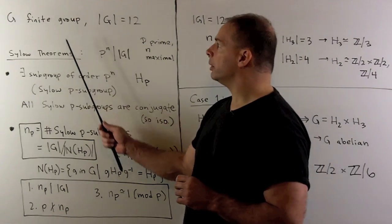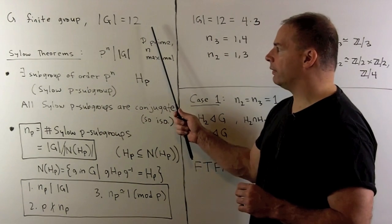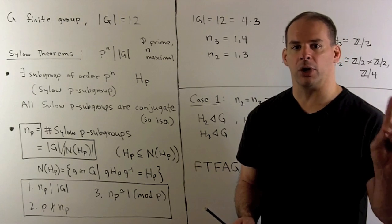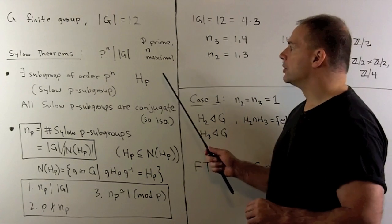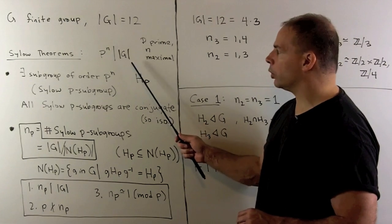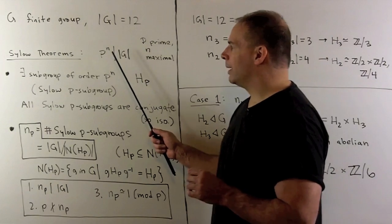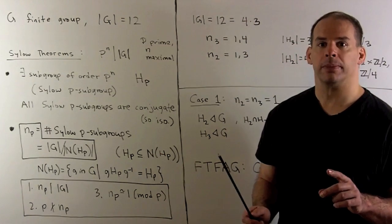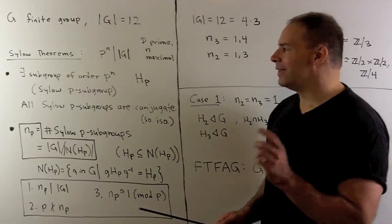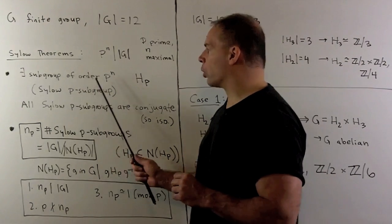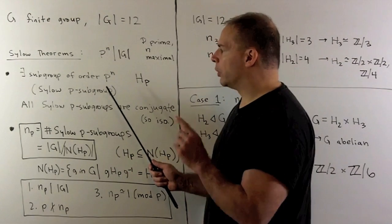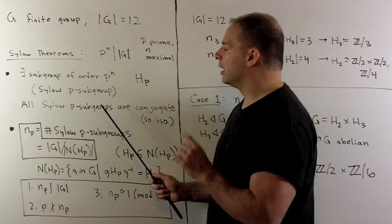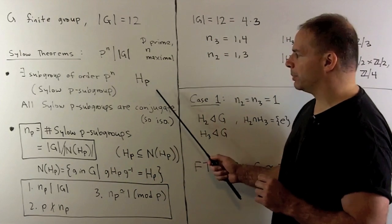G is a finite group, the order of G is equal to 12. We state the parts of the Sylow theorems that we're going to use. If p is a prime that divides the order of the group, we assume p to the n divides the order of the group, where n is as large as can be. Then there exists a subgroup of order p to the n. We call any subgroup of this order a Sylow p-subgroup, and we denote the generic one by H sub p.